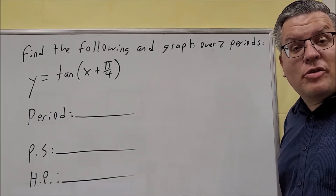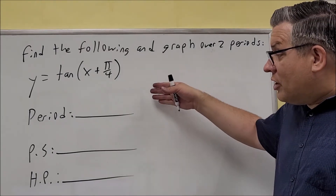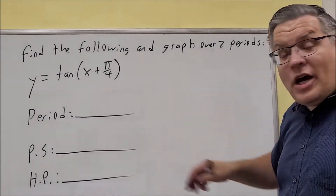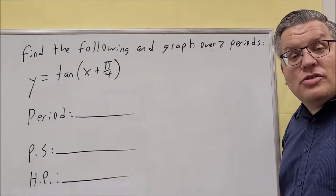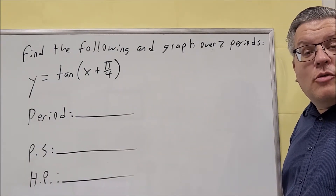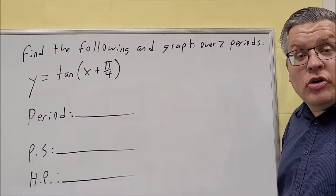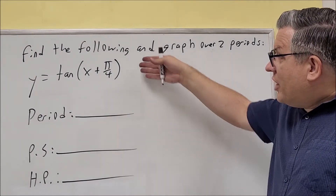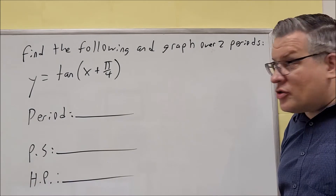Now it's time to start getting into some of the graphs on these. We have the period, phase shift, and half point that they want us to find, and then we want to use this information in order to graph. So we have tangent of x plus pi over 4.